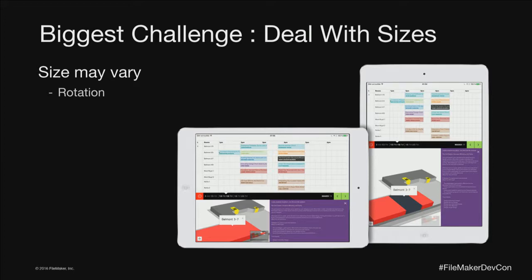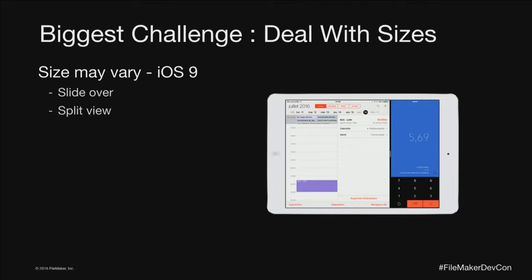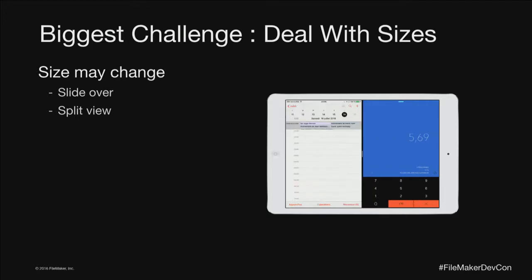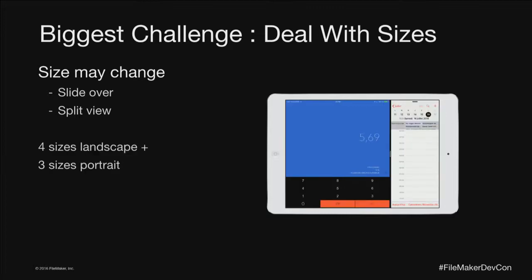You can stop rotation with a script, but if you do, the user experience is not as good as your competitor's. So you have to learn how to deal with that. Another variable is the new iOS 9 behaviors: slide over and split view. You have to be aware that you cannot stop those behaviors in FileMaker Go. In Xcode, if you're going to the store with Xcode, you have a function called Full Screen where you can get rid of these two behaviors.